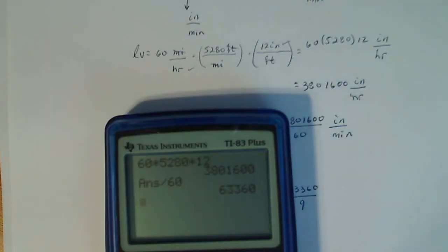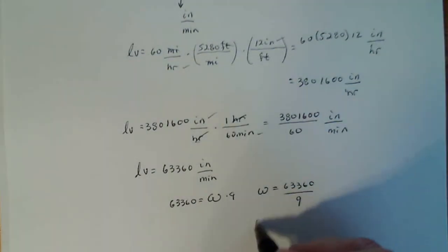So 63,360 divided by 9, 7,040. So omega is 7,040.